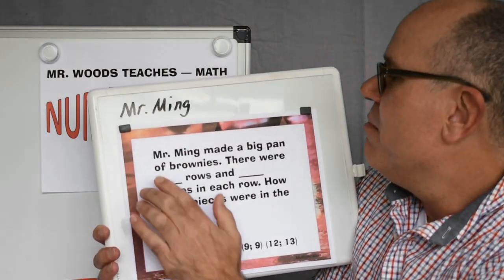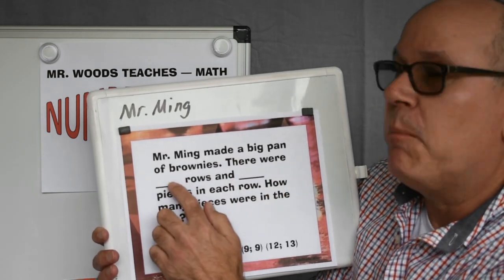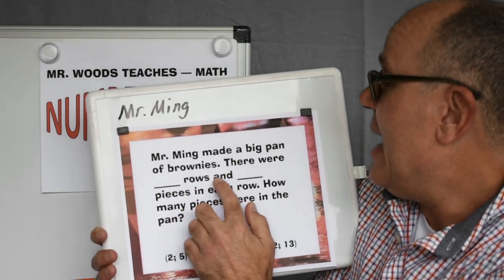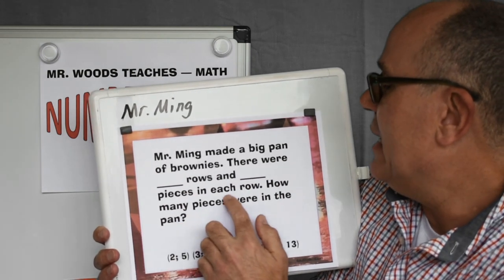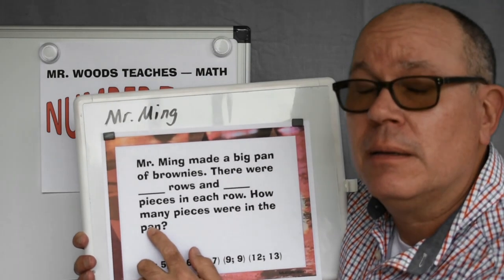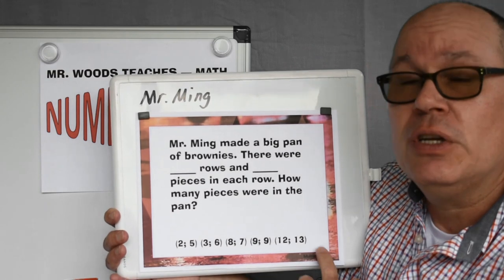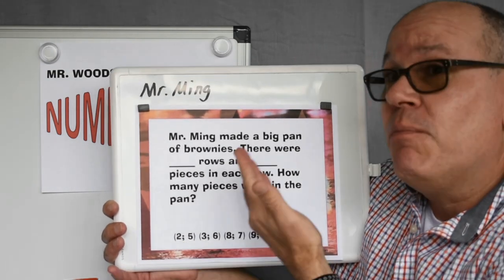Well, Mr. Ming made a big pan of brownies. There were blank rows and blank pieces in each row. How many pieces were in the pan? You can use your numbers, make up your own, plug it in.